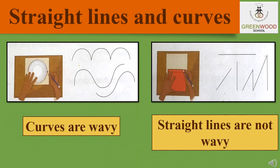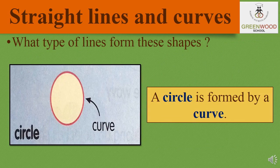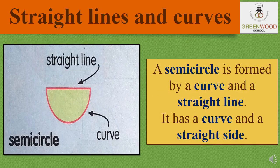Our next topic is straight lines and curves. As you can see from the picture, curves are wavy while straight lines are not at all wavy. What type of lines form these shapes? The first one is circle — a circle is formed by a curve, it does not have any straight line. The second one is semi-circle — a semi-circle is formed by a curve and a straight line, so it has a curve and one straight side.